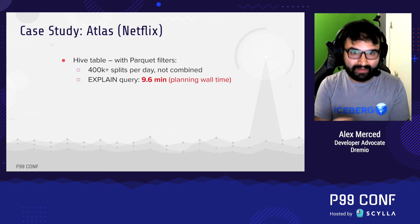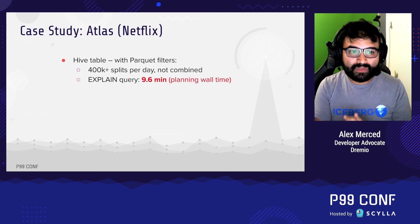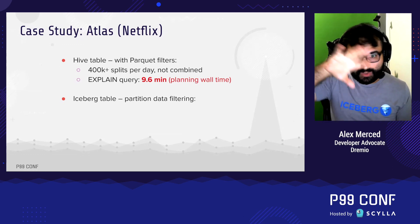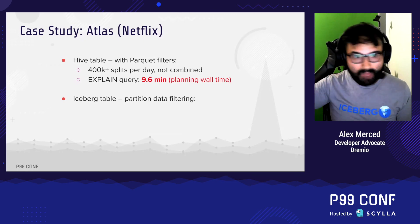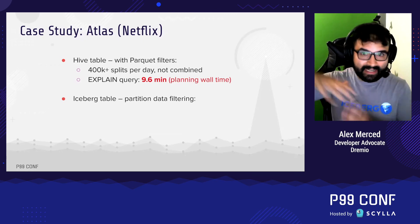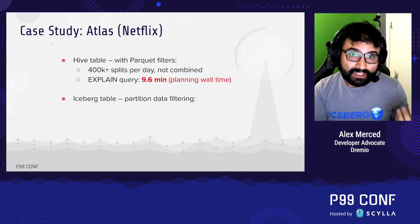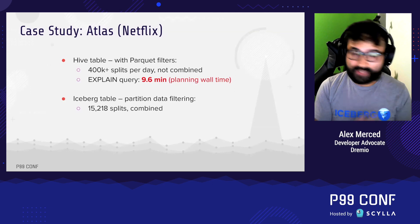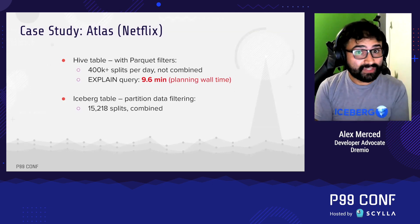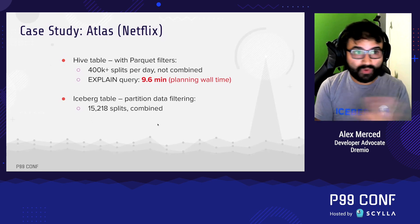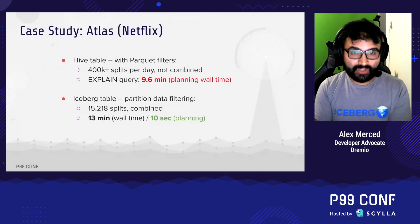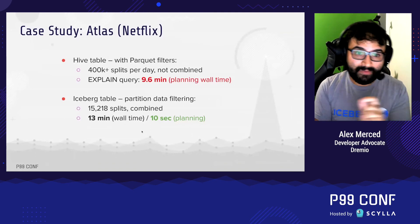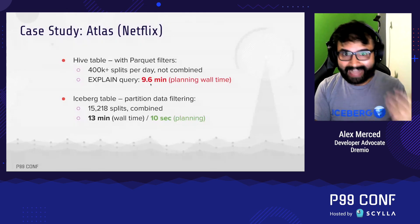Now watch what happens when we introduce Iceberg with partition data filtering — using any partitioning the table has to reduce large chunks of files. For example, partitioning by month and only querying that month's data, ignoring everything else. With partition data filtering, the number of splits was reduced to 15,218 total — far less. How much faster? The total time for planning plus execution was 13 minutes. And the actual planning was only 10 seconds — down from 9.6 minutes.